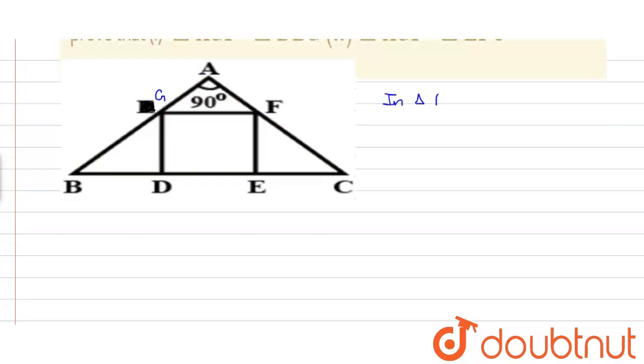In triangle AGF and triangle DBG we have angle GAF is equal to angle BDG because both are 90 degrees, and angle AGF is equal to angle DBG because these angles are corresponding angles.